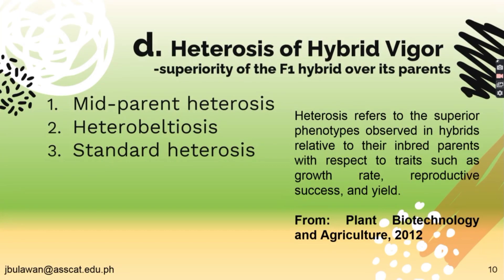Next is heterosis or hybrid vigor — the superiority of the first generation F1 hybrid over its parents. We have first, mid-parent heterosis; second, heterobeltiosis; and third, standard heterosis. Heterosis refers to superior phenotypes — the physical characteristics of the plants — observed in hybrids relative to their inbred parents with respect to traits such as growth rate, reproductive success, and yield, according to Plant Biotechnology and Agriculture 2012. Genotype refers to the genetic characteristics of the plants.